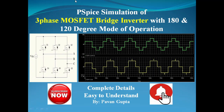Hello viewers, welcome to the channel. In this tutorial I'm going to tell you how to simulate the three-phase MOSFET bridge inverter with the 180-degree and 120-degree mode of operation using PSPICE. On the left side there is a picture of a three-phase MOSFET bridge inverter which is fed by the DC supply. The upper group is 1, 3, 5 and the lower group is termed as 4, 6, 2 — it gets the name based on the triggering sequence.